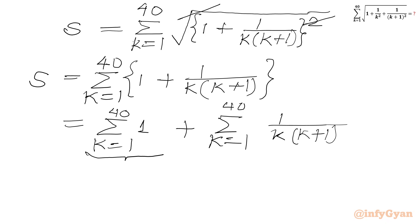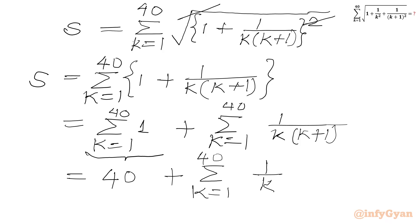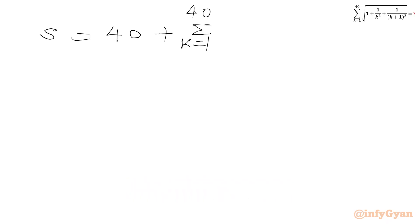Now we know that if we are adding 40 ones we will get sum 40, plus sigma k equals 1 to 40. Here we can use partial fractions — we can write directly the result as 1 over k minus 1 over (k+1). If we take LCM, we get denominator k(k+1) and numerator k+1 minus k, which gives us 1. So we can use this result. Now let me write S equal to 40 plus sigma k equals 1 to 40 of 1 over k minus 1 over (k+1).